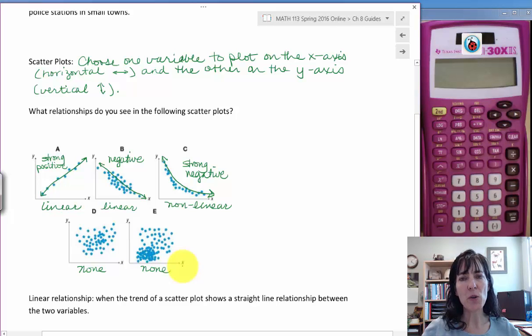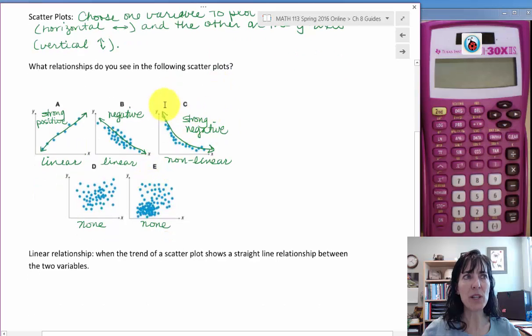The relationship that we see in these two graphs is none. Linear is where the dots that are plotted follow pretty much in a straight line, either a positive direction or a negative direction. And this one does follow a line, a curve, but not a straight line, so it's non-linear.